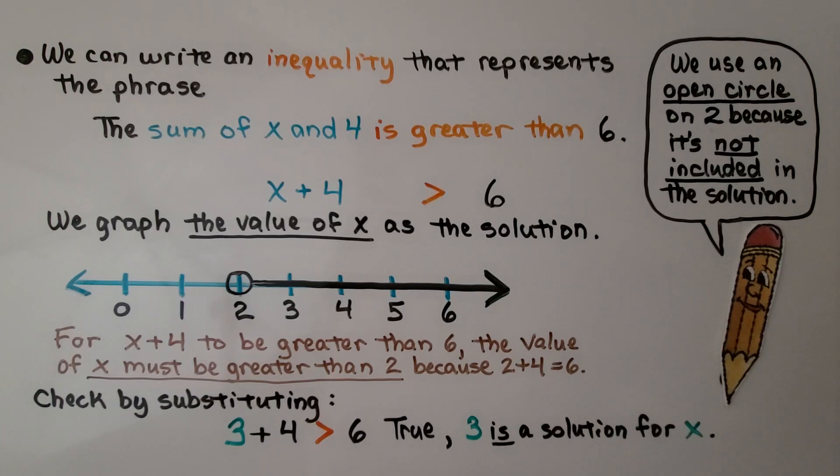We can check by substituting. We pick one of the numbers on our ray here and we can choose 3. If we did 3 plus 4, that would be greater than 6. That's a 7. So that would be true. 3 is a solution for x.